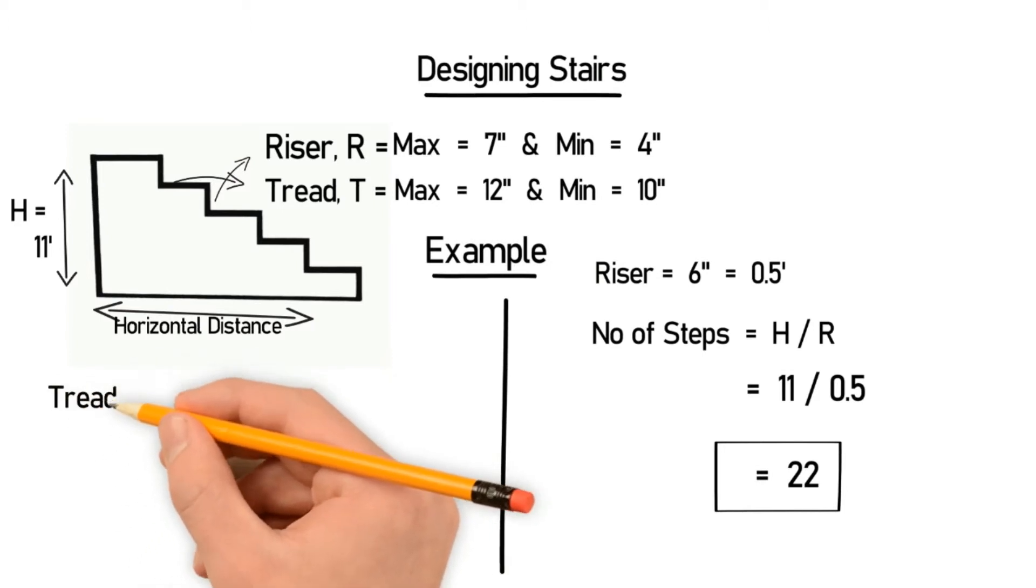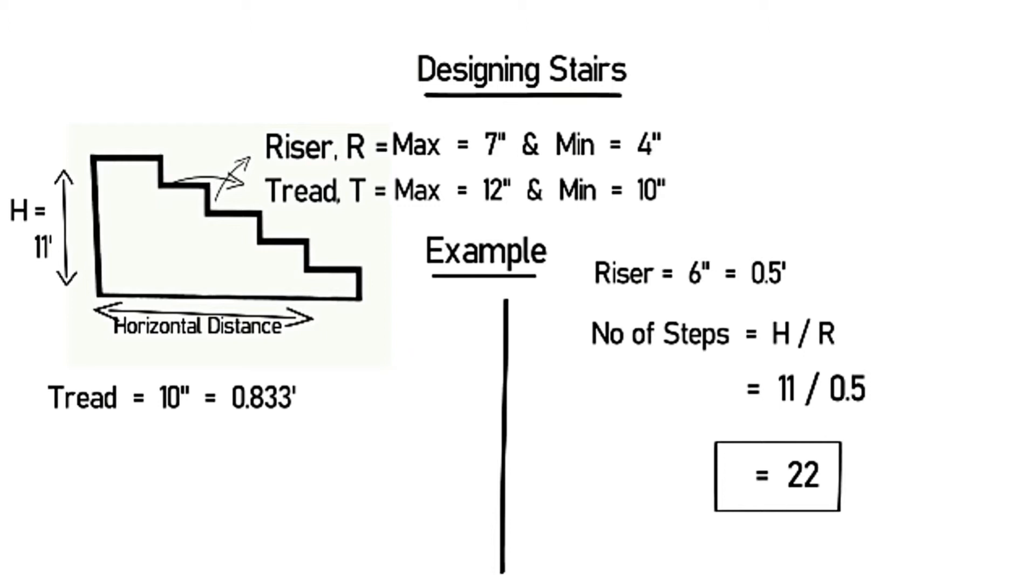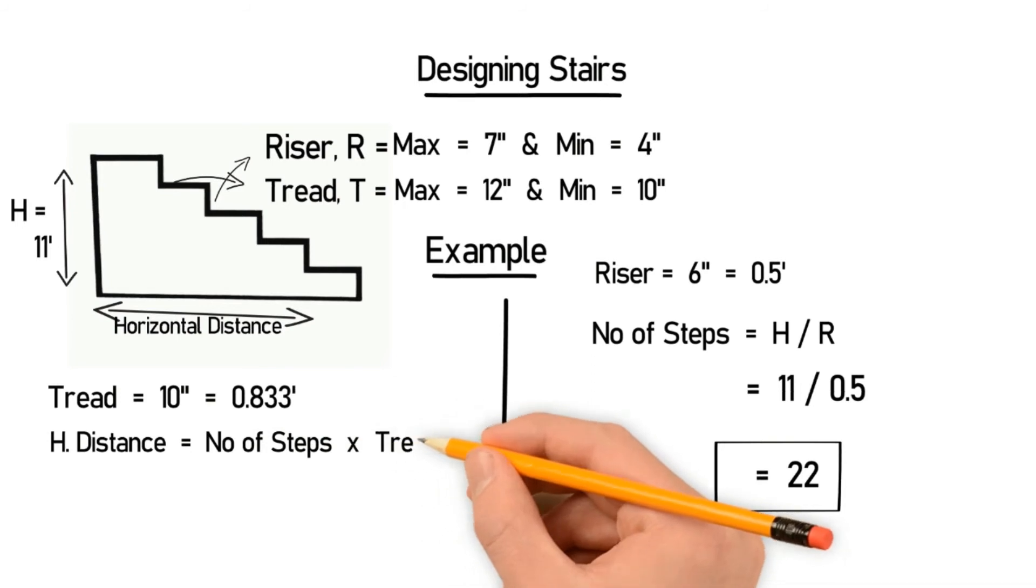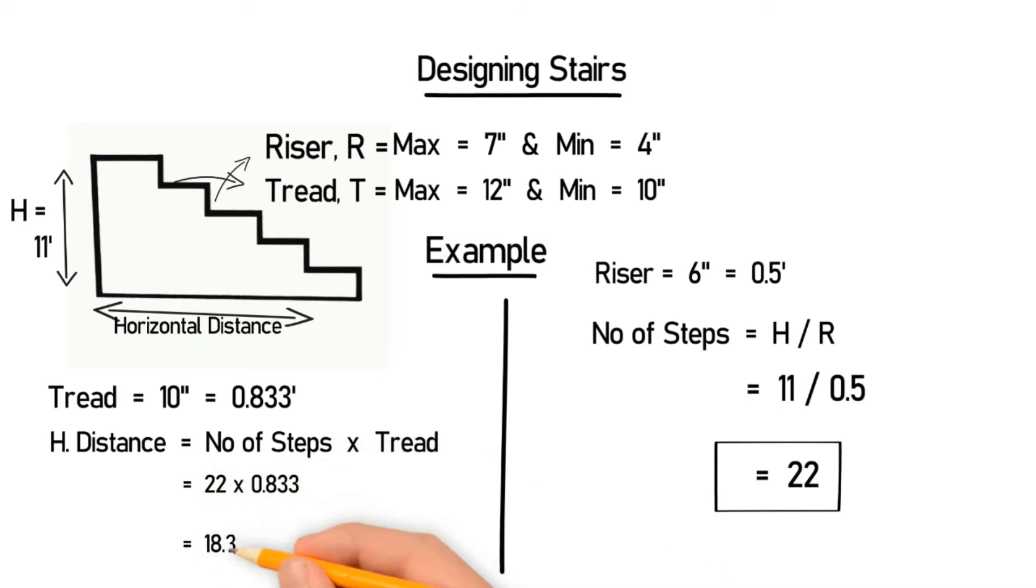Now for example you take the tread which is equal to 10 inches. Convert it into feet and you will get 0.833 feet. Let's find the horizontal distance required for the stairs. Horizontal distance is equal to number of steps multiplied by tread. So the number of steps we already calculated is 22, and the tread for this example is 0.833, so this will be 22 multiplied by 0.833 which is equal to 18.3 feet. So we have calculated the number of steps which is 22 and the horizontal distance which is 18.3 feet.